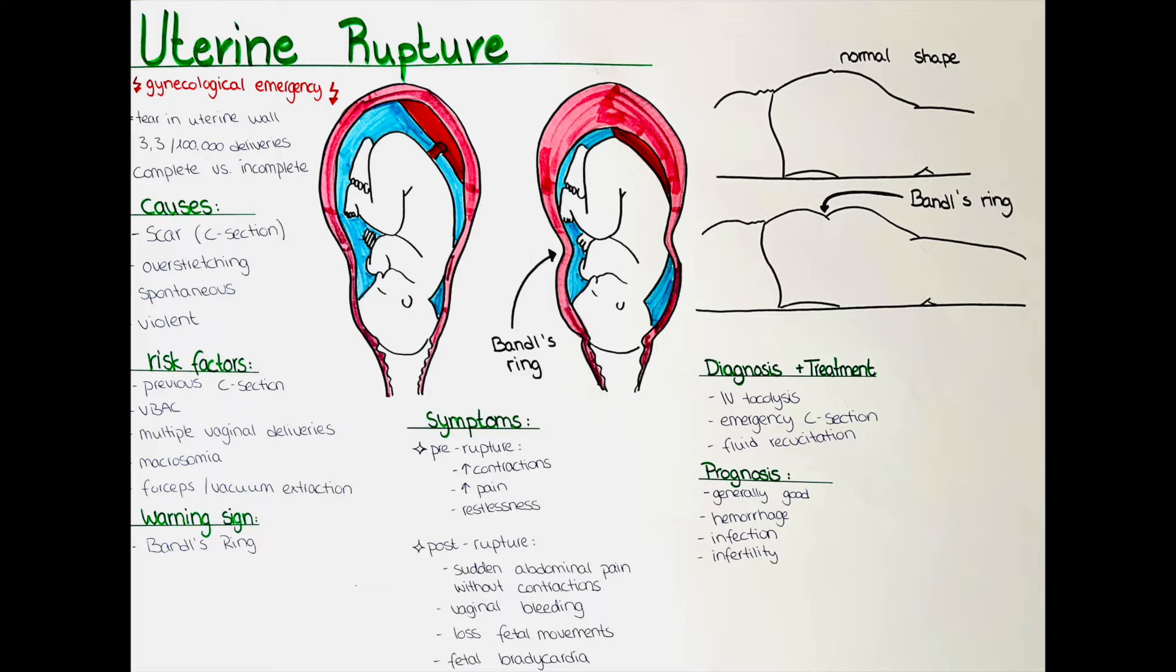The last type is the violent uterine rupture. A violent uterine rupture is most commonly seen in motor vehicle accidents or falls.